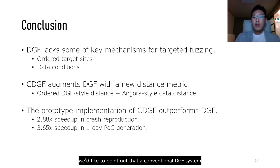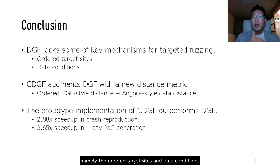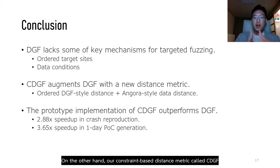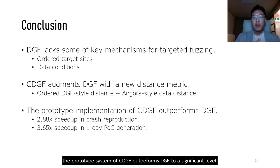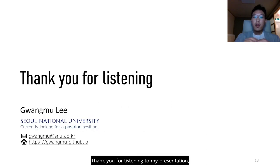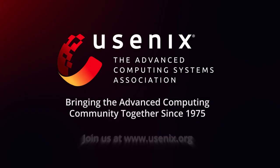To wrap up, conventional DGF systems still lack the necessary mechanisms for targeted fuzzing — namely ordered target sites and data conditions. Our constraint-based distance metric, CDGF, incorporates those requirements on top of conventional DGF. The prototype system of CDGF outperforms DGF to a significant level. Thank you for listening to my presentation, and I will be pleased to answer your questions.